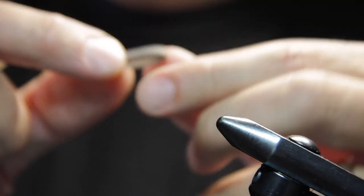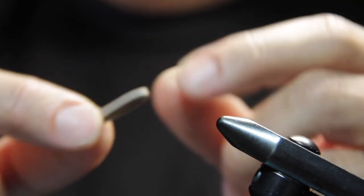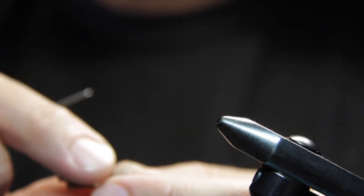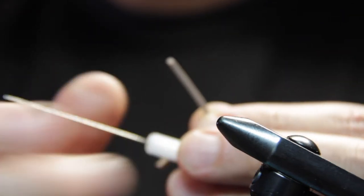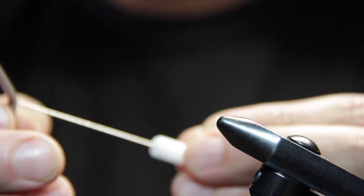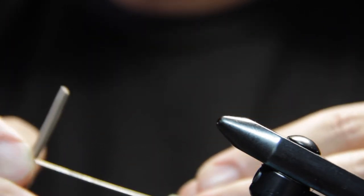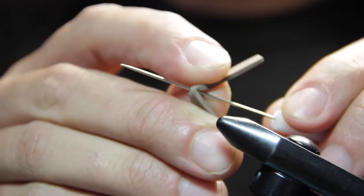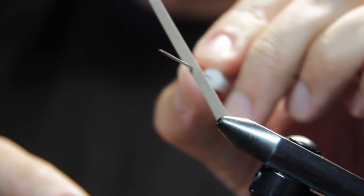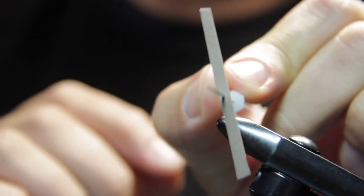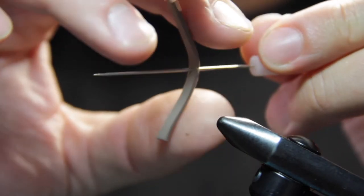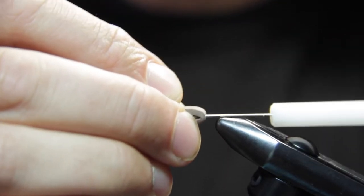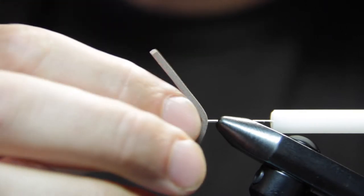I'm going to fold it in half here, just like I did there. At that halfway point we're going to shove it on our bodkin, just like that right in the middle. That's important. And then we're going to put our bodkin in our vise.